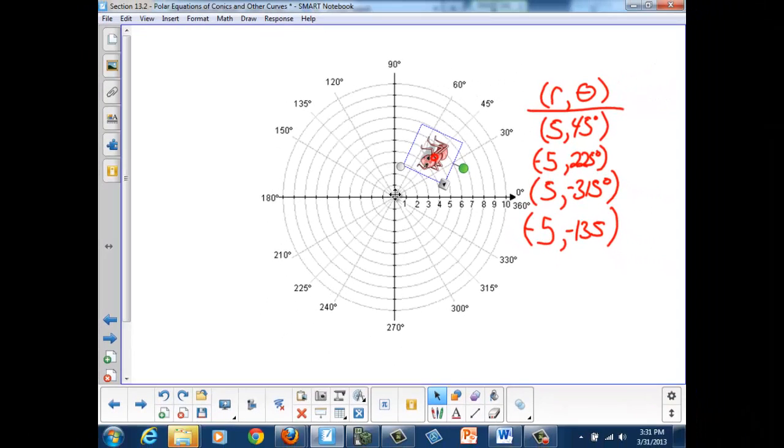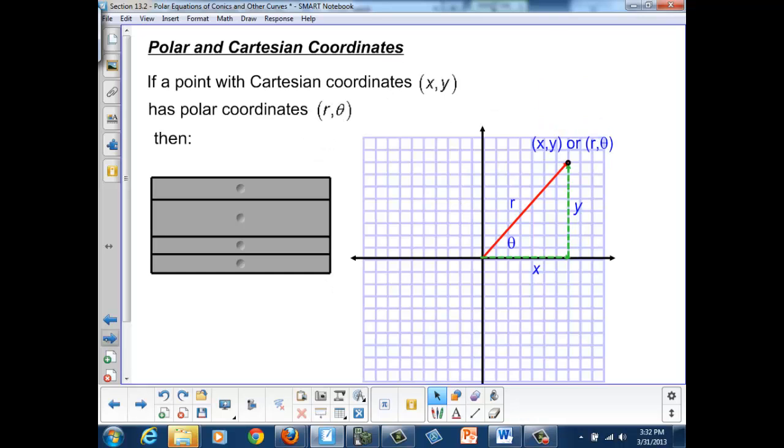You might want to think about how we could extend this to coterminal angles. What would be another positive r and positive theta combination that would allow me to end up in the same location? I'll let you think about that one.